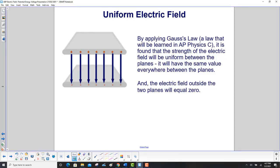By applying Gauss's law, a law that will be learned in AP Physics C, it is found that the strength of the electric field will be uniform between the planes. It will have the same value everywhere between them, and the electric field outside the planes will be zero.